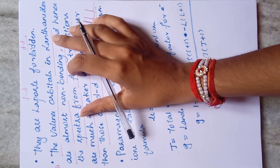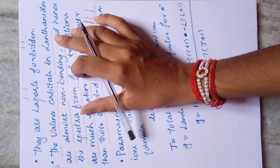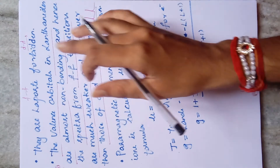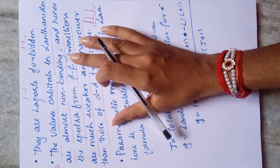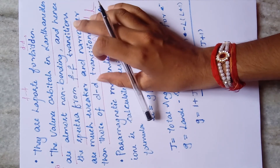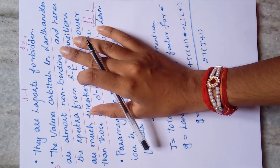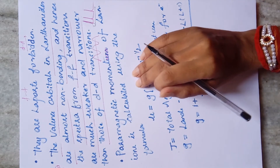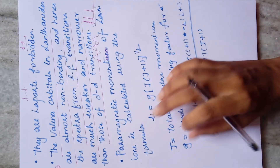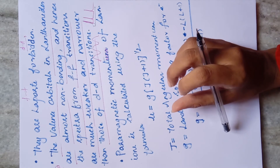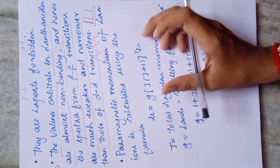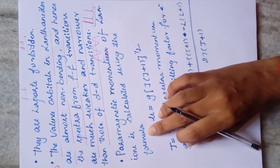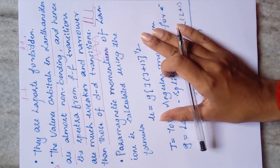This point about f-f transition bands being sharp rather than broad appeared in CSIR, possibly December 2017. Because the valence orbitals in lanthanides are almost non-bonding, the transitions are weak and you observe narrower bands. This applies to actinides as well.